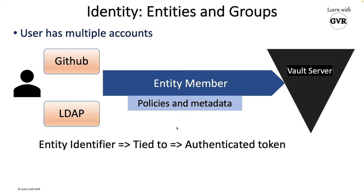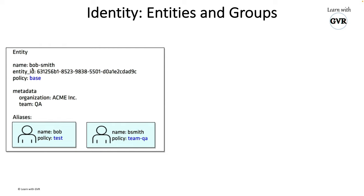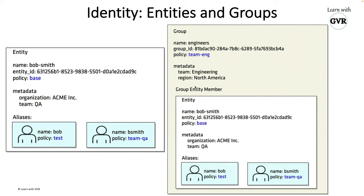Once identifiers are tied with the authentication token, they can be grouped together. You can log in with any of them, and one benefit is that audit logs and audit trails are recorded — showing what time you logged in with GitHub, with user/password, etc. For example, an entity named 'Bob Smith' with aliases 'bob' and 'bsmith' can be grouped into an 'engineers' group.